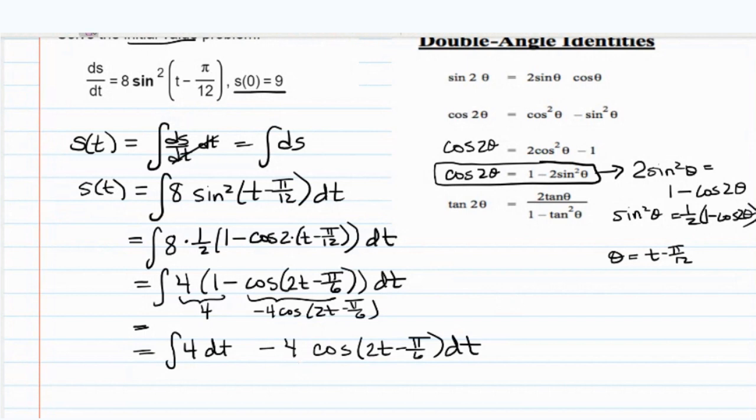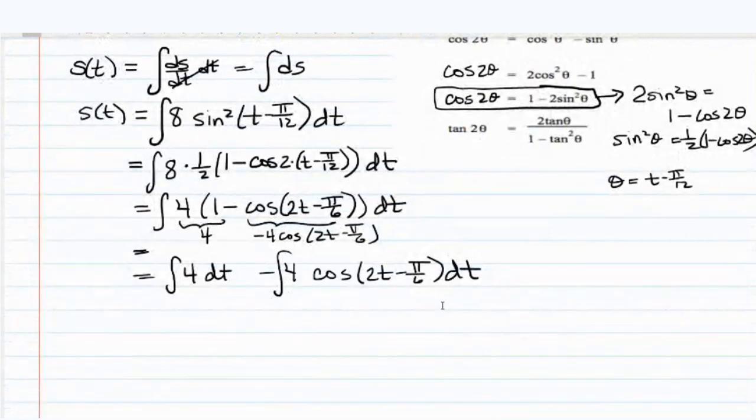And you can leave the 4 in or out of the integral. Coefficients can be brought through the integral symbol, whatever is more convenient. And the reason I'm mentioning that is I notice that I'm probably going to choose to do a u substitution and let u be the argument of the trig function. And if I do that, then what would the differential du be equal to? 2 dt, that's right.